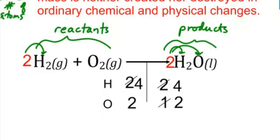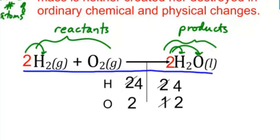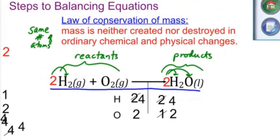So if that's the case, I can look at what I'm given: H is four, H is four, O is two, O is two. This is a balanced equation. My final answer would be 2H2 plus O2 yields 2H2O. That would be my final answer.